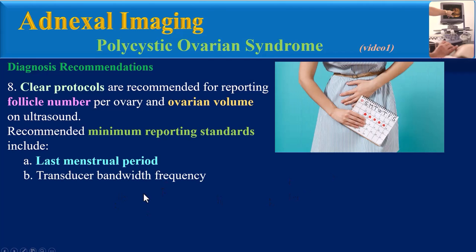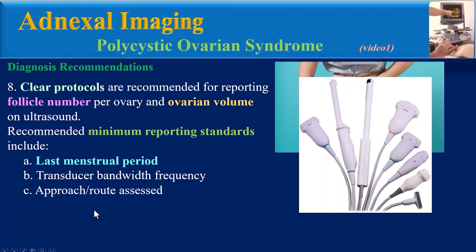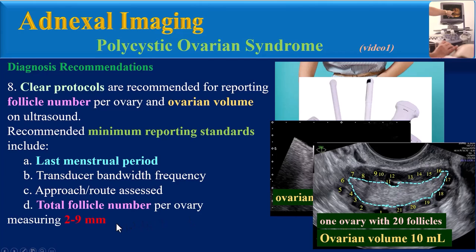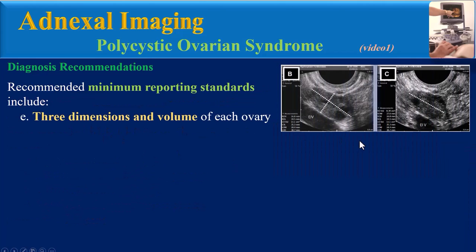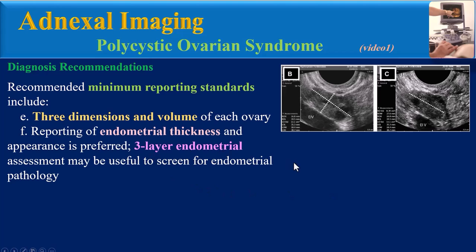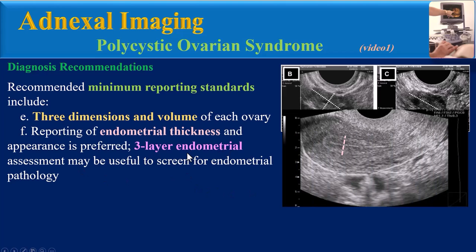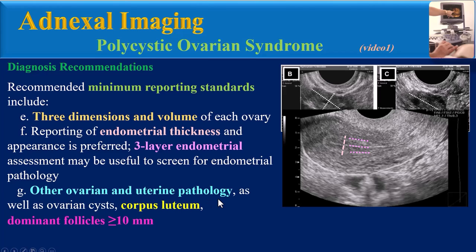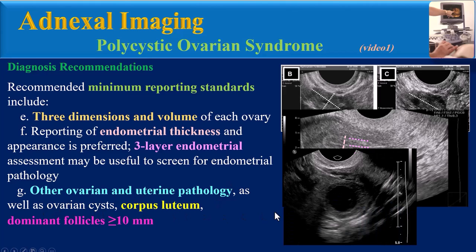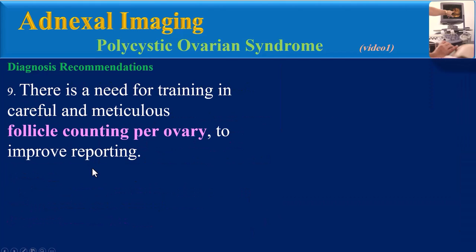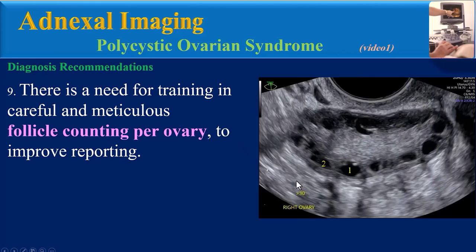Clear protocols are recommended for reporting follicle number per ovary and ovarian volume. Recommended minimum reporting standards include last menstrual period, transducer bandwidth and frequency, approach (transabdominal or transvaginal), total follicle number per ovary measuring 2 to 9 millimeters, three-dimensional measurements and volume of each ovary, and endometrial thickness and appearance. Three-layer endometrial assessment may be useful to screen for endometrial pathology. Other ovarian and uterine pathology — including ovarian cysts, corpus luteum, and dominant follicles — should also be reported. Training in careful and meticulous follicle counting per ovary is needed to improve reporting.